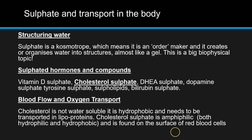There are also sulphated hormones and compounds such as vitamin D sulphate, DHEA sulphate, dopamine sulphate, tyrosine sulphate, and sulpholipids. When these molecules become sulphated, it changes their properties so they function differently in the body. Cholesterol sulphate is what we're going to be discussing shortly. Cholesterol itself is not water soluble — it's hydrophobic — and needs to be transported in lipoproteins such as LDL and HDL. Cholesterol sulphate, however, is amphiphilic, meaning it has both a water-hating and a water-loving end, and it is found on the surface of red blood cells.